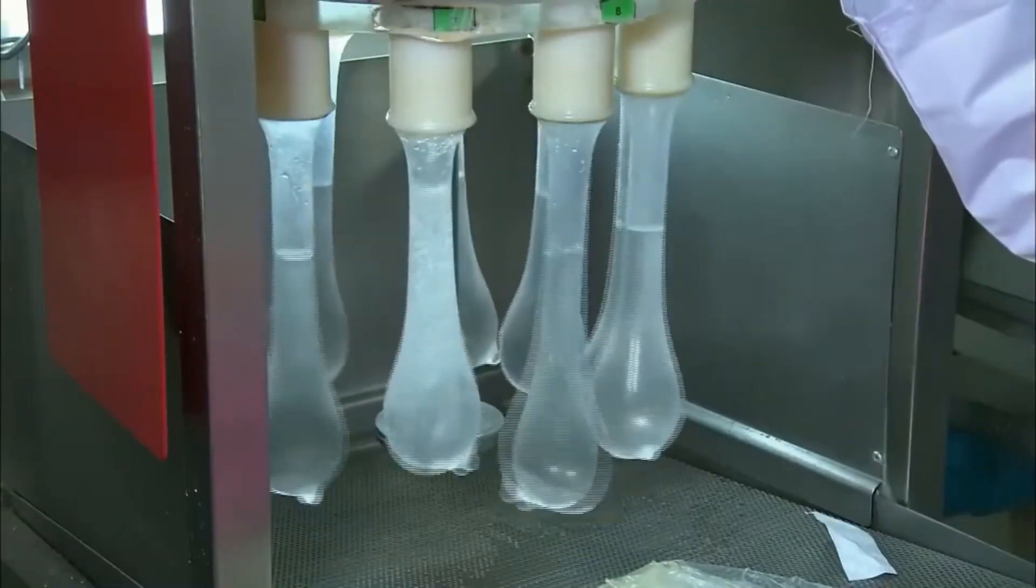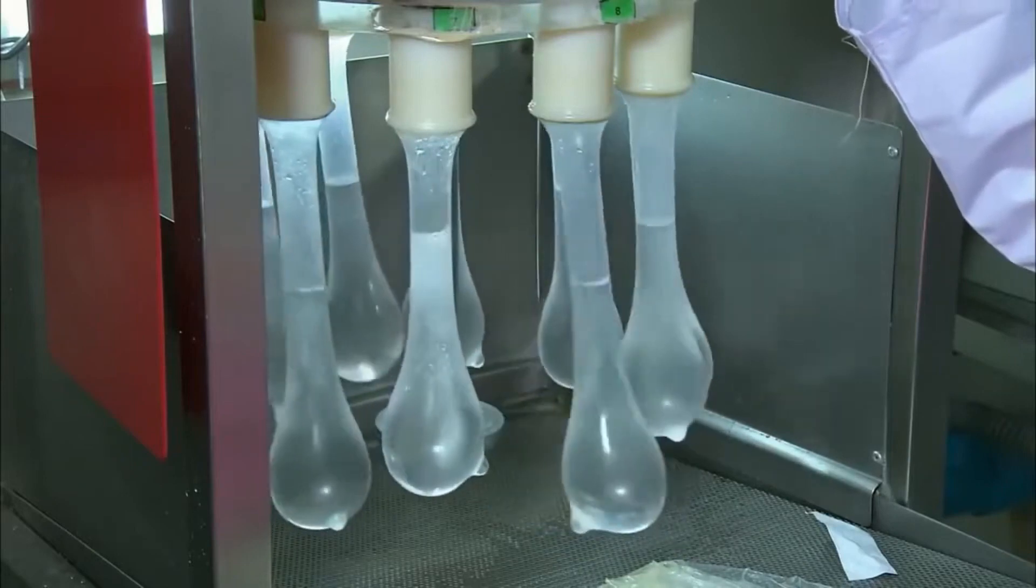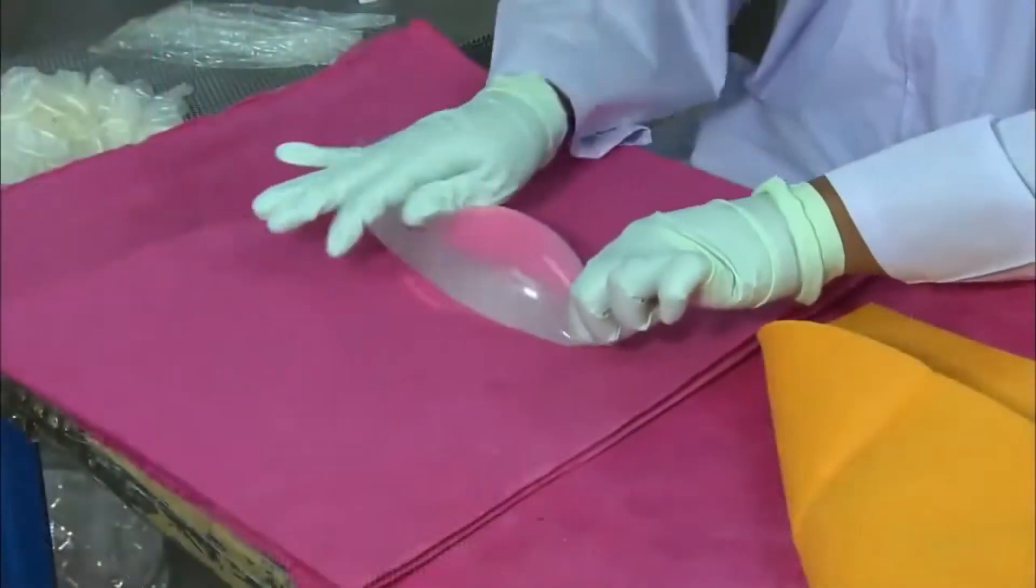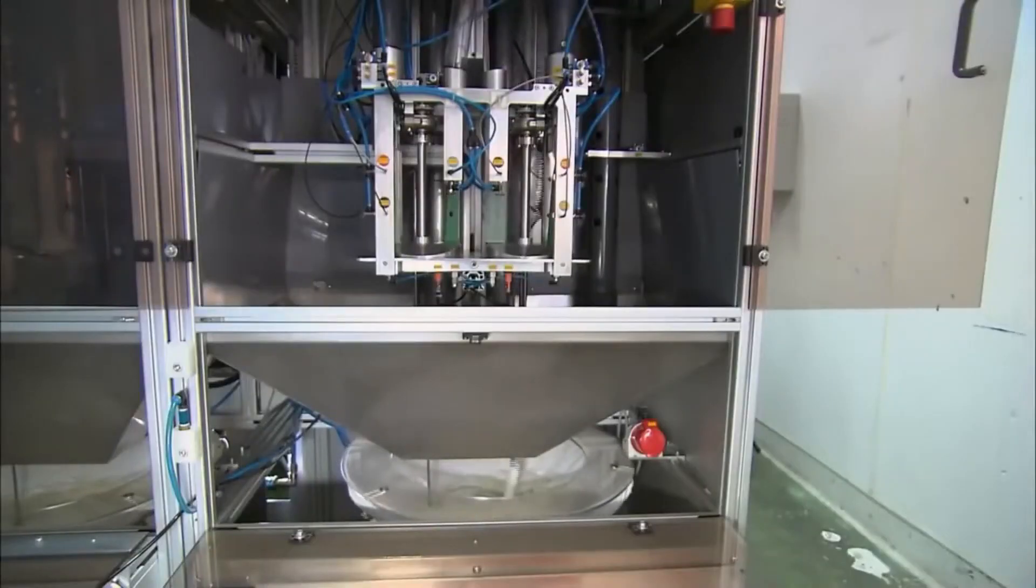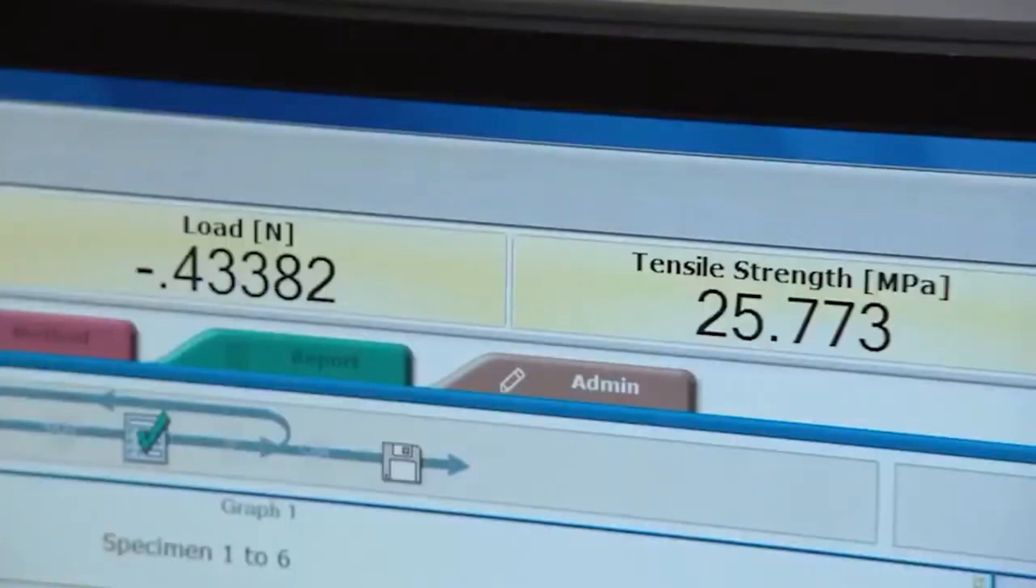Firstly, there's the pinhole test, a sophisticated challenge to identify leaks. Condoms are filled with water and immersed in a vat. If any water leakage completes an electric circuit, bingo, you've got a defective condom. This method is remarkably precise.